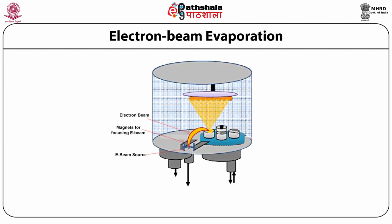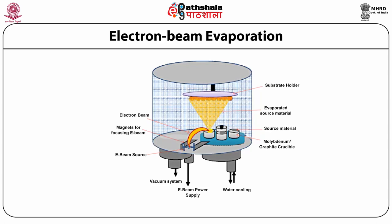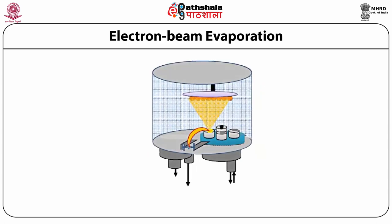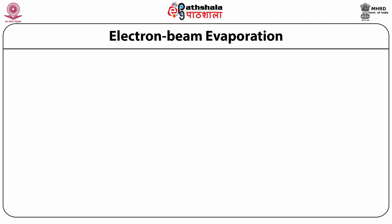The figure shows the electron beam evaporation setup schematic, in which we can see a substrate holder, the evaporated source material, an electron beam, magnets for focusing the electron beam, an electron beam source, a vacuum system to create vacuum inside the chamber, an inlet for water cooling of the source materials, and the e-beam power supply.